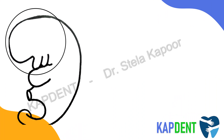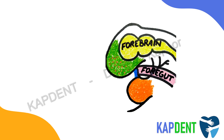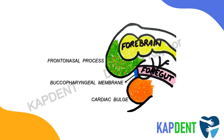Now let's have a closer look at the cephalic region. In this region there is simultaneous development of brain vesicles, which push some part of the mesoderm anteriorly, leading to the formation of the frontonasal process. Thus the stomodium is now bound above by the frontonasal process and below by the cardiac bulge. Apart from this, there is presence of the buccopharyngeal membrane, which later disintegrates such that the stomodium opens into the foregut.